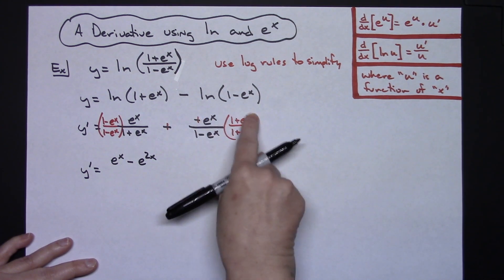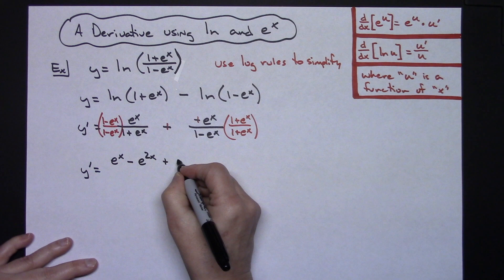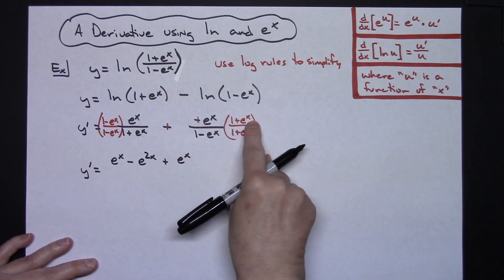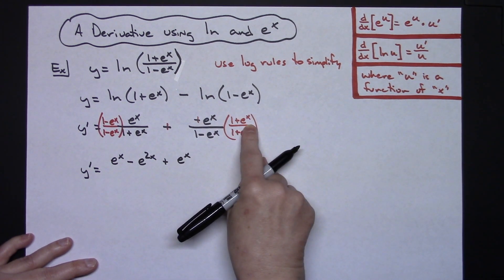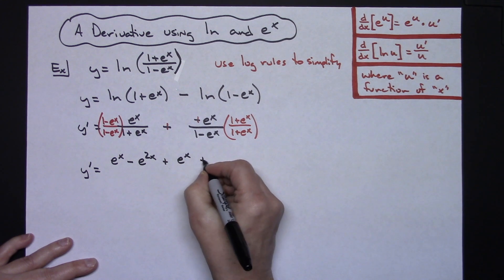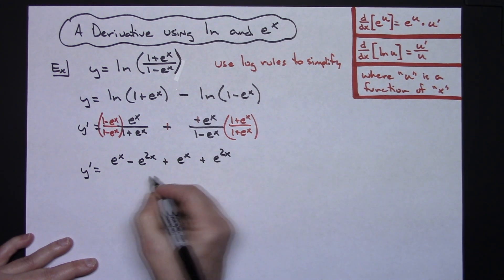Distributing over here e to the x times 1 is just going to give me an e to the x. Distributing again, e to the x times e to the x is going to give me e raised to the 2x.